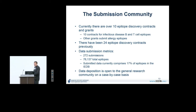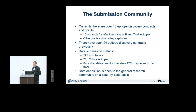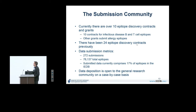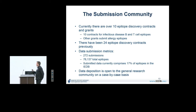There is a large amount of data coming from the submission community. These submissions are typically NIH-funded epitope discovery contracts. Right now there are 10 active contracts dealing with infectious diseases — half focused on B-cell epitopes, half on T-cell epitopes — with 24 previous contracts. These relatively few sources have contributed 76,000 epitopes to the IADB, roughly 20% of all epitopes. There is also an ability to deposit data on a case-by-case basis by contacting us.